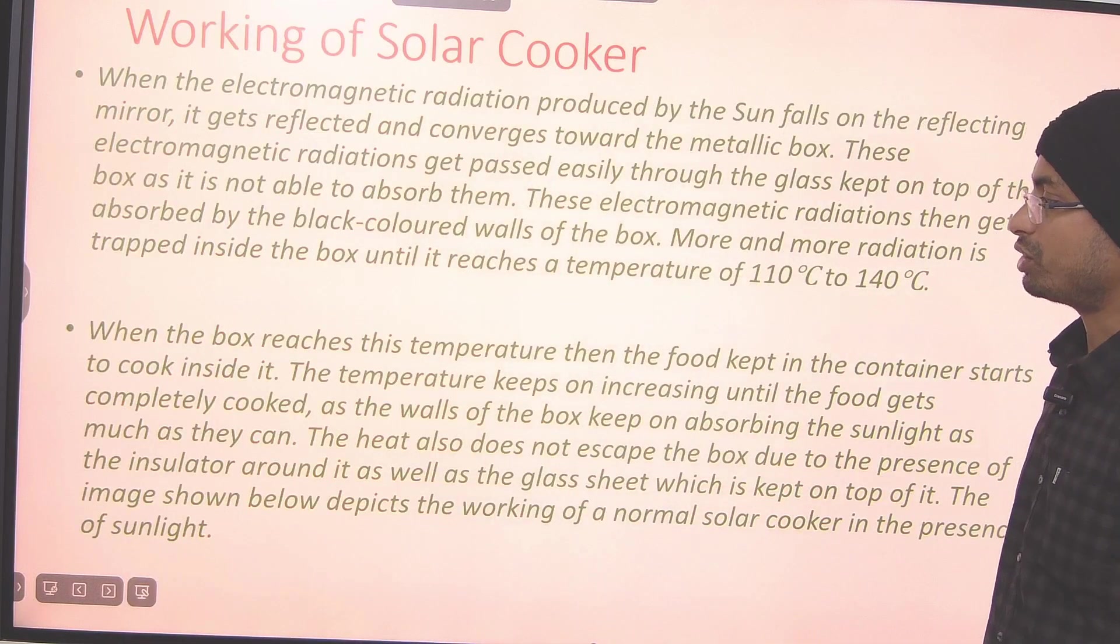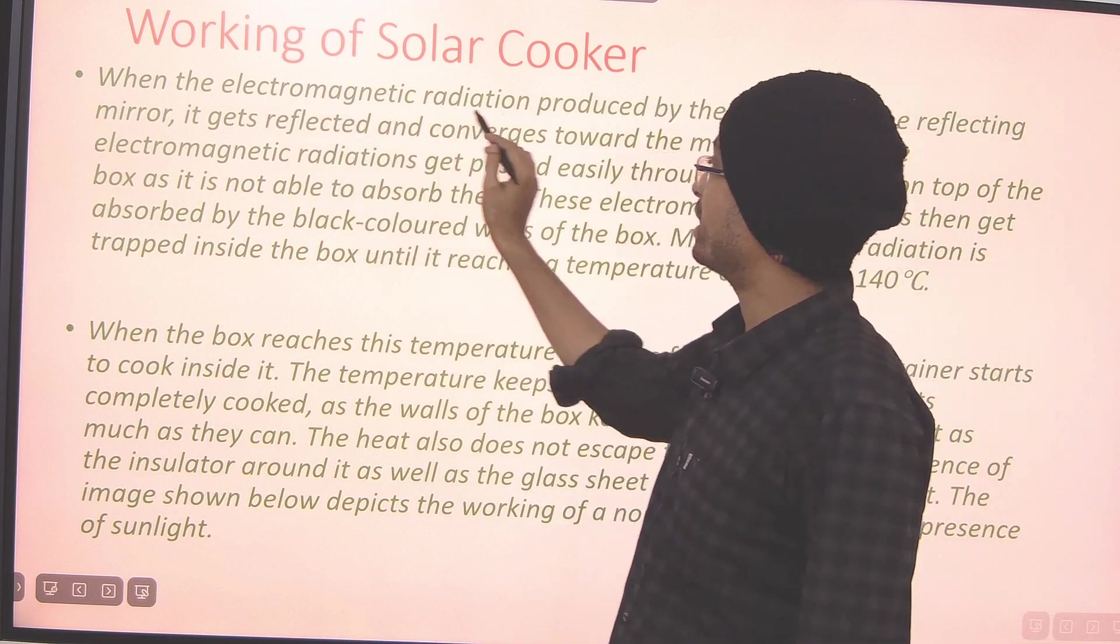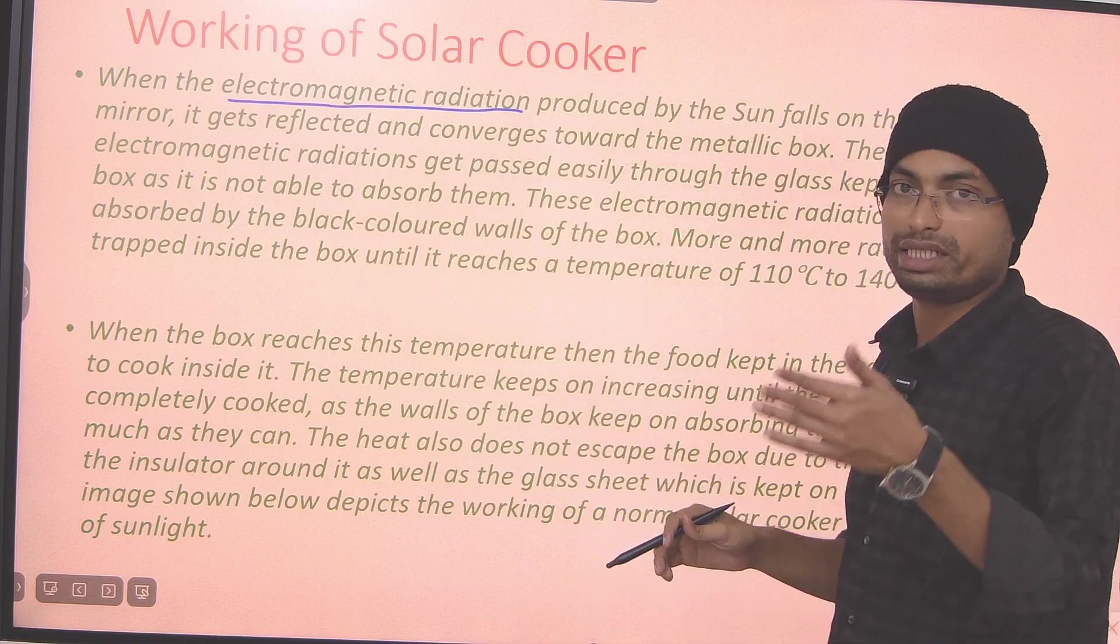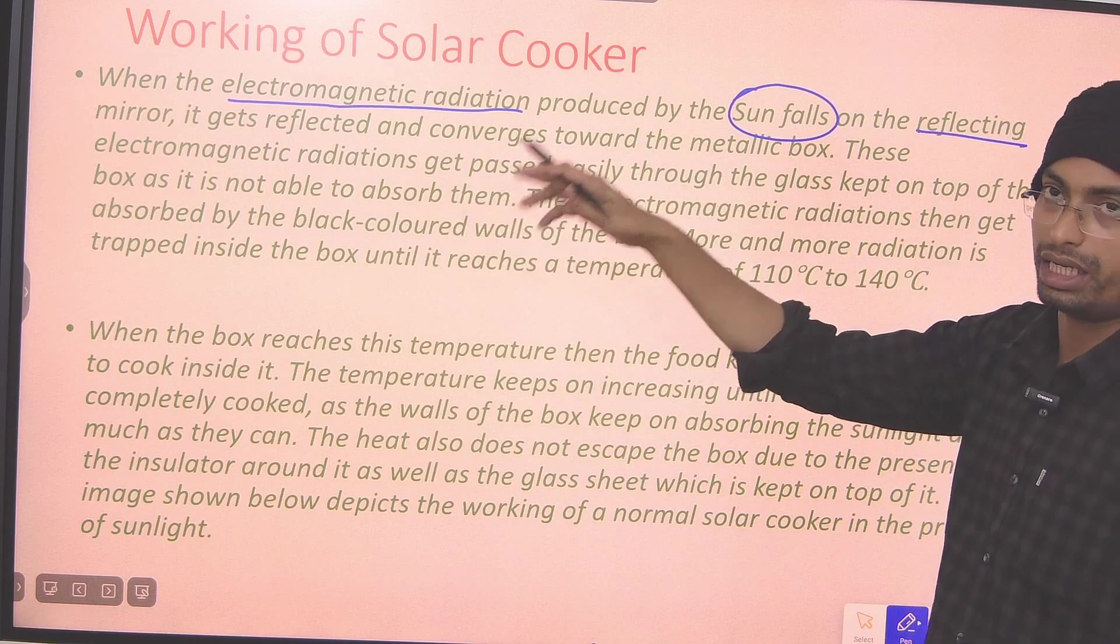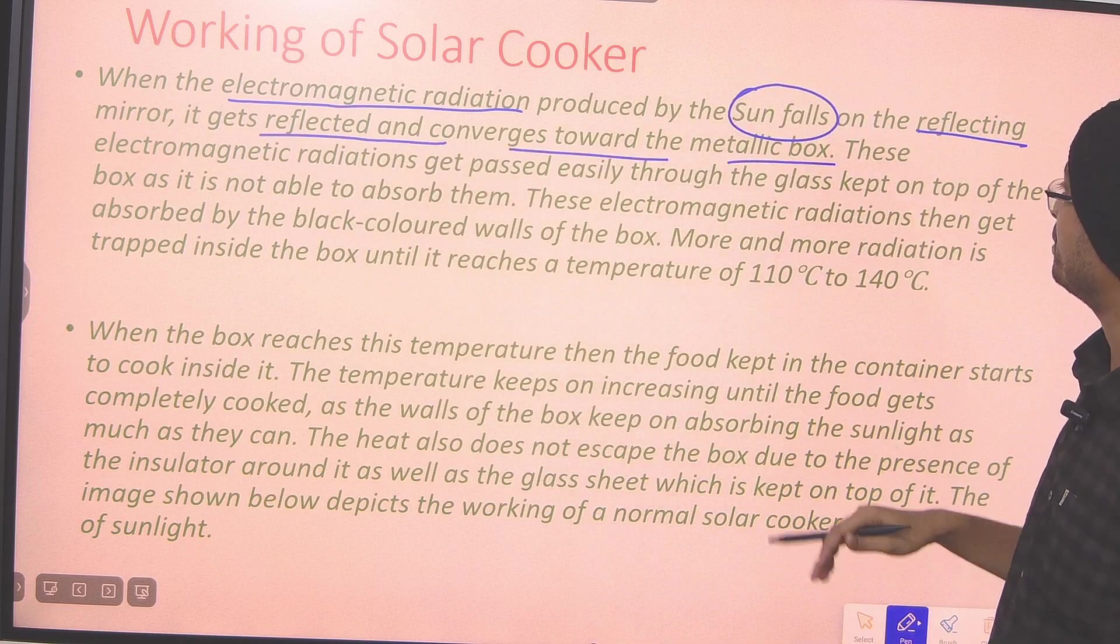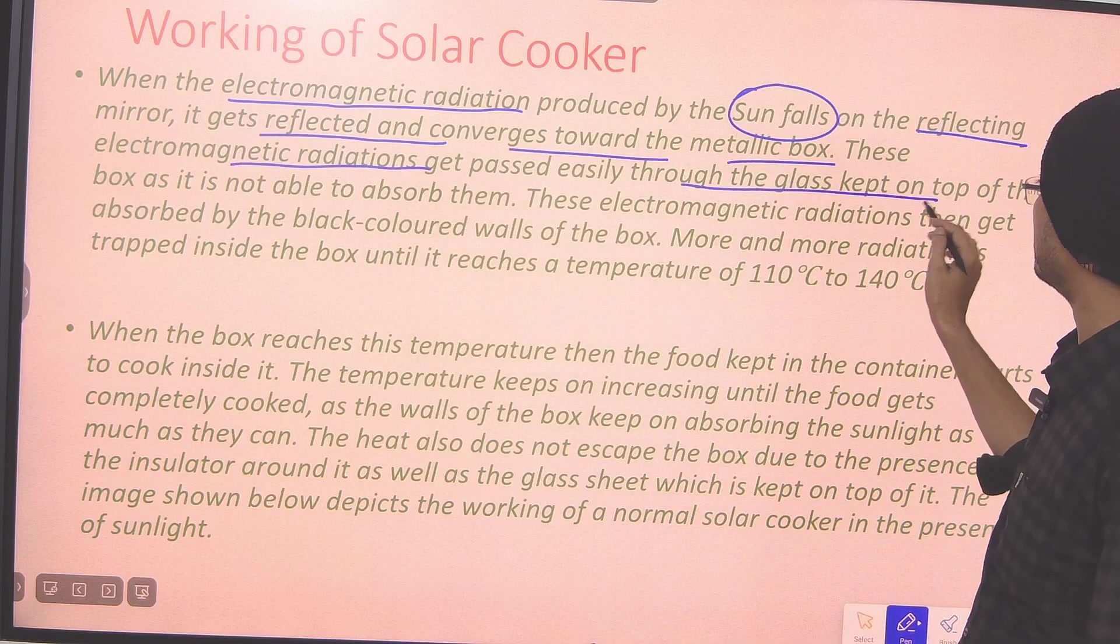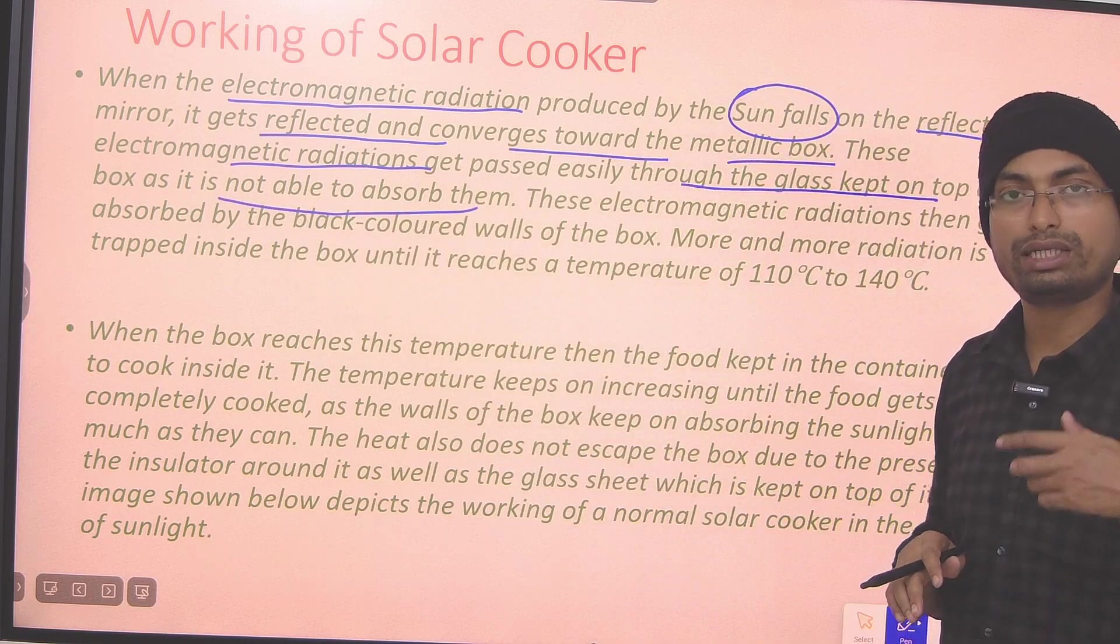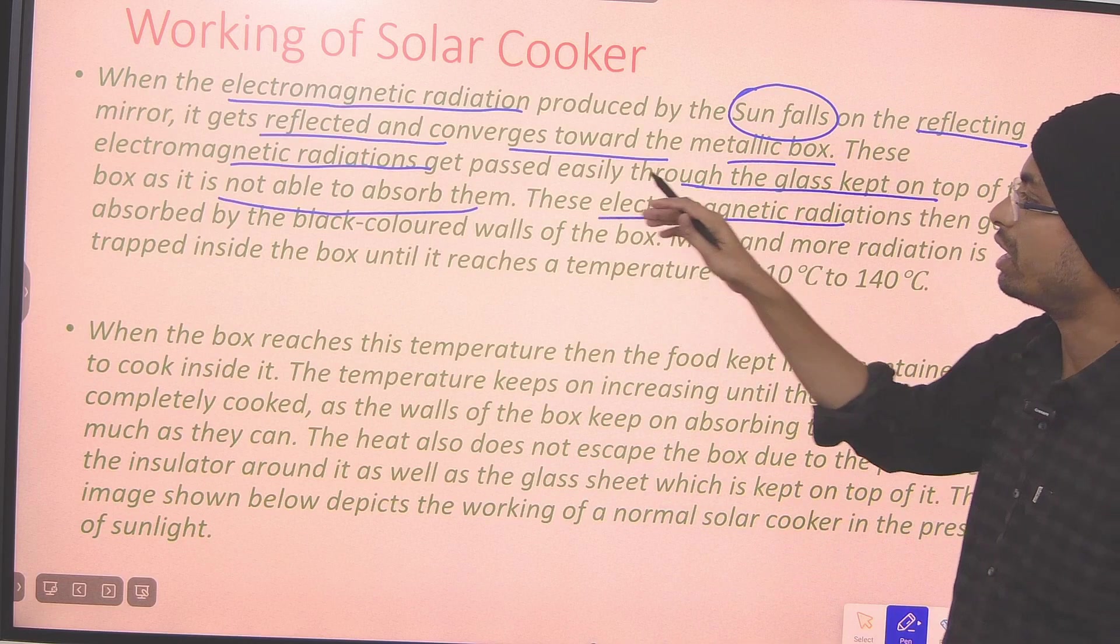This is the working process, which we discussed. Now, when we have electromagnetic radiation, electromagnetic radiation, what we have seen is the sunlight. This electromagnetic radiation comes and hits our reflector. This will come to the reflecting mirror that we have seen. This is the reflecting mirror. These rays will converge into that box. And then, this electromagnetic radiation, when it goes inside the box...